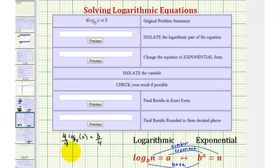So we have log base five of x equals three-fourths. This is what we enter when it says isolate the logarithm. So we'd enter log base five of x equals three-fourths.